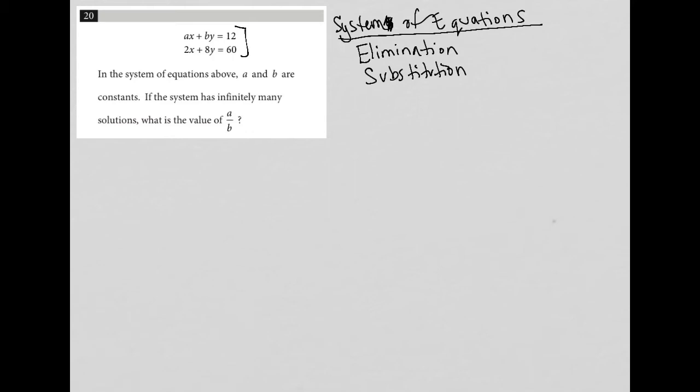So the question says in the system of equations above, so even if you didn't know, you would have read that here. A and B are constants. If the system has infinitely many solutions, what is the value of A over B? So we're trying to find A over B.